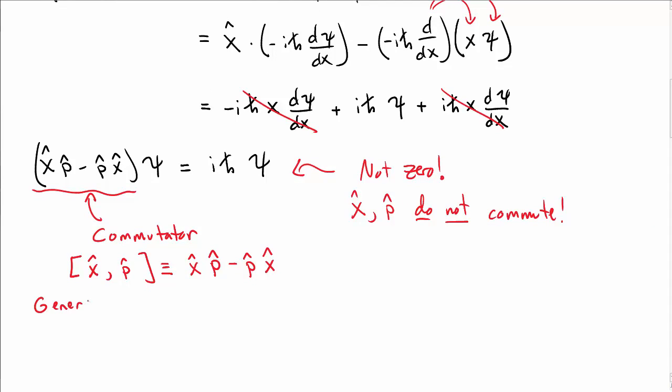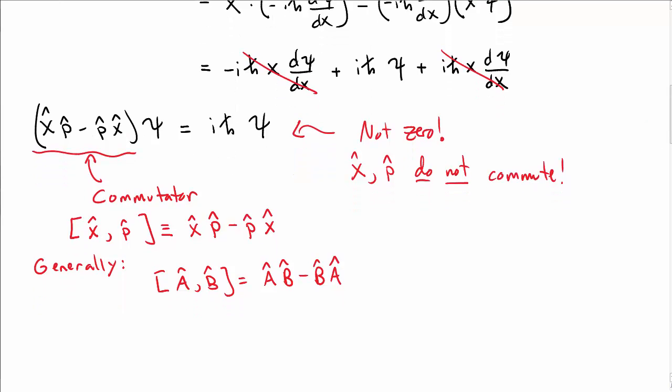this is true for any two operators. We'll say square brackets A comma B, A-hat B-hat, is A-hat B-hat minus B-hat A-hat. It's the commutator between those two operators.